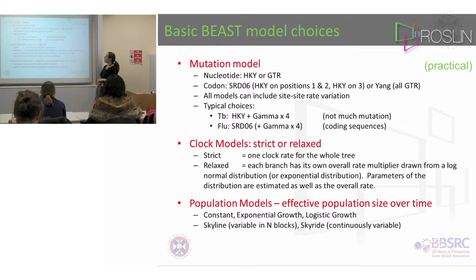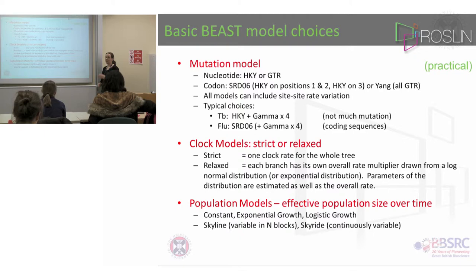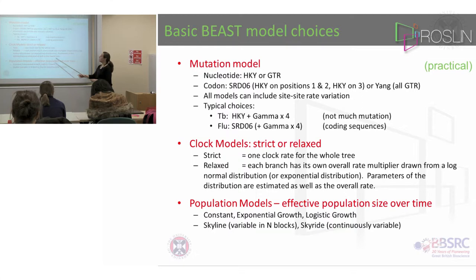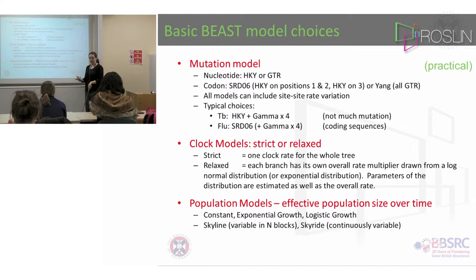Or you can have a Yang model where each codon position gets its own GTR model. All of the models can include site-to-site rate variation. Some positions are conserved, some are medium-low variable, some are medium-high variable, and some are highly variable. You might want to account for that variation of variability, and you do that by using a gamma model. The distribution of categories is described by a gamma distribution — so that would be a gamma-four model.